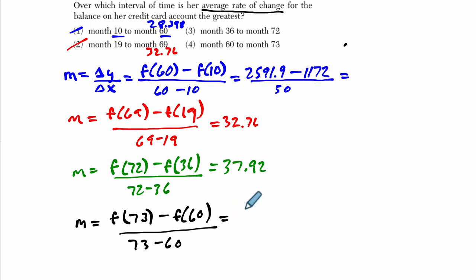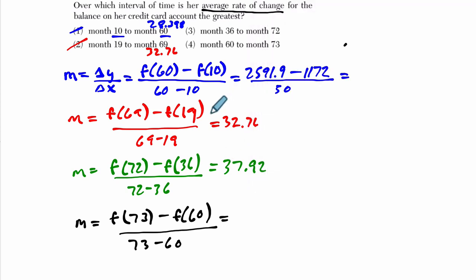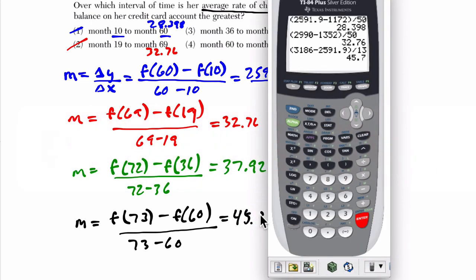So, f of 73 minus f of 60 over 73 minus 60. Now, when we do the calculations here, I think we should get a much higher number. Let's check. So, we do parentheses, and we do month 73 first. 3186 minus, what is it, month 60. The balance is 2591.9. And then we divide by the difference of the month. So, that's 73 minus 60, which is 13. We get 45.7, clearly the highest here. So, 45.7.